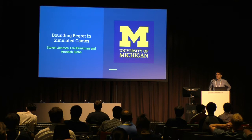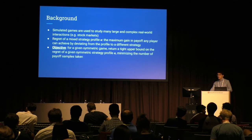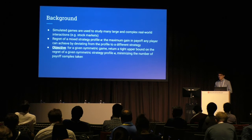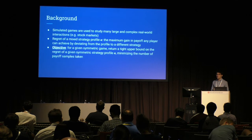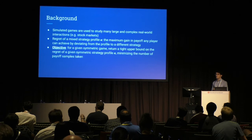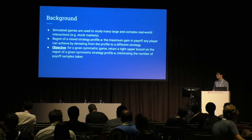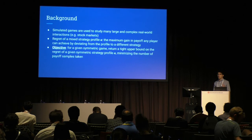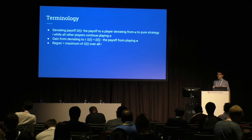Hi, I'm Steven Jackman from the University of Michigan, presenting an algorithm for bounding regret in simulated games. Simulated games are used to simulate complex multi-agent interactions such as the stock market. We care about the regret of a mixed strategy profile sigma — the maximum amount any player can gain by switching from that profile to some other strategy. In simulated games, payoffs are random, so finding regret directly is difficult. Our objective is an algorithm that, for a given symmetric strategy profile, returns a tight upper bound on its regret, minimizing the number of simulator samples.